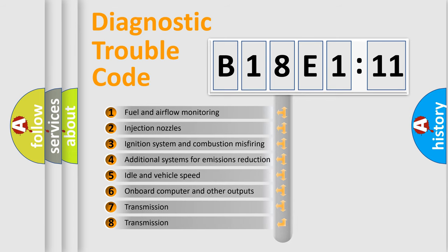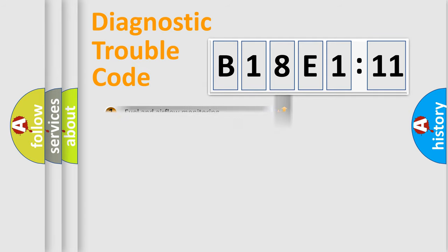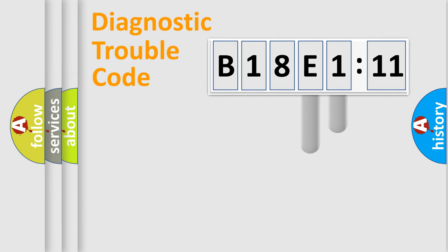The third character specifies a subset of errors. The distribution shown is valid only for the standardized DTC code. Only the last two characters define the specific fault of the group.